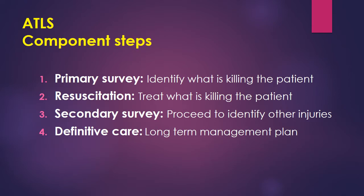The four main components of advanced trauma life support are: primary survey, resuscitation and early management, secondary survey, and then definitive care. Primary survey is done either in the ER or at the accident site to identify what is killing the patient — to keep that patient alive until they reach a hospital where definitive care can be given. Resuscitation means treating the cause of what is killing the patient.